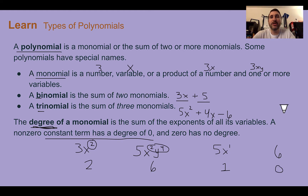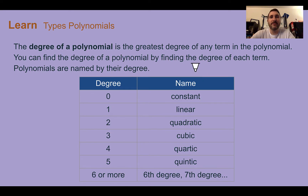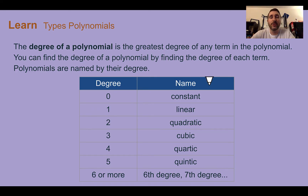The degree of the monomials is important to learn, as that is how we are going to name polynomials. The degree of a polynomial is going to be the greatest degree from any of the monomial terms. So we find the degree for everything, whichever has the highest, that will be the degree of the polynomial, and that is going to be needed to name these polynomials.